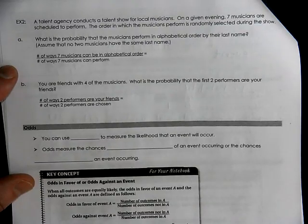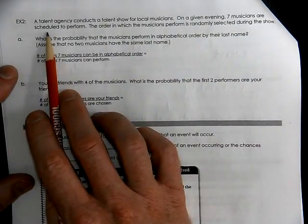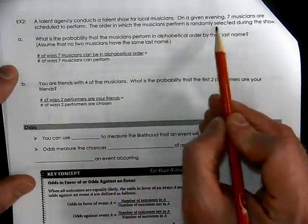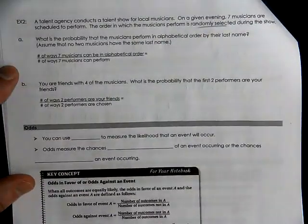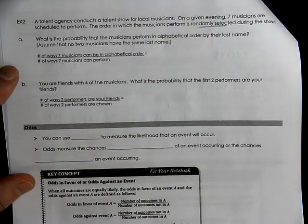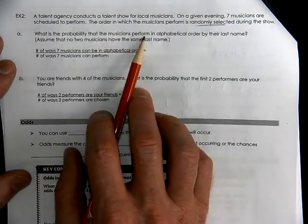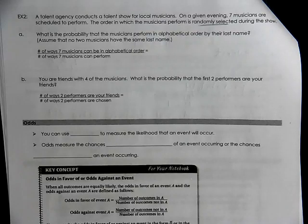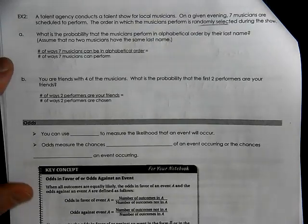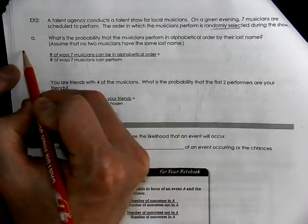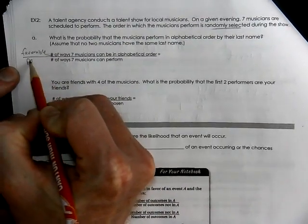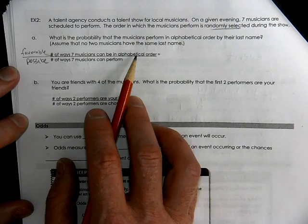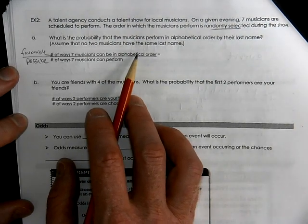A talent agency conducts a talent show for local musicians. On a given evening, seven musicians are scheduled to perform. The order in which the musicians perform is randomly selected. What is the probability that the musicians perform in alphabetical order? So it's easy to say I don't know. But you got to concentrate that probability means favorable over possible. Favorable means what are the number of ways musicians can be in alphabetical order? How many ways is that possible?